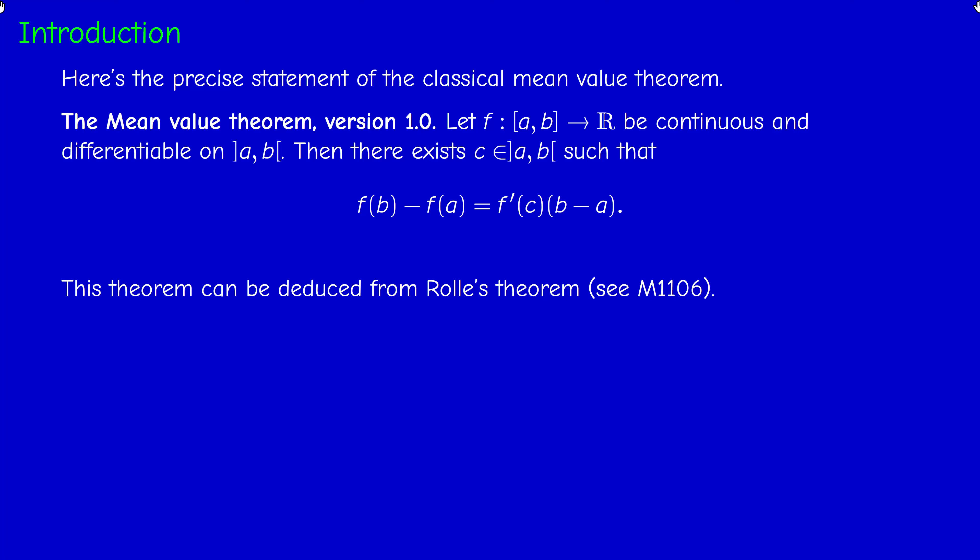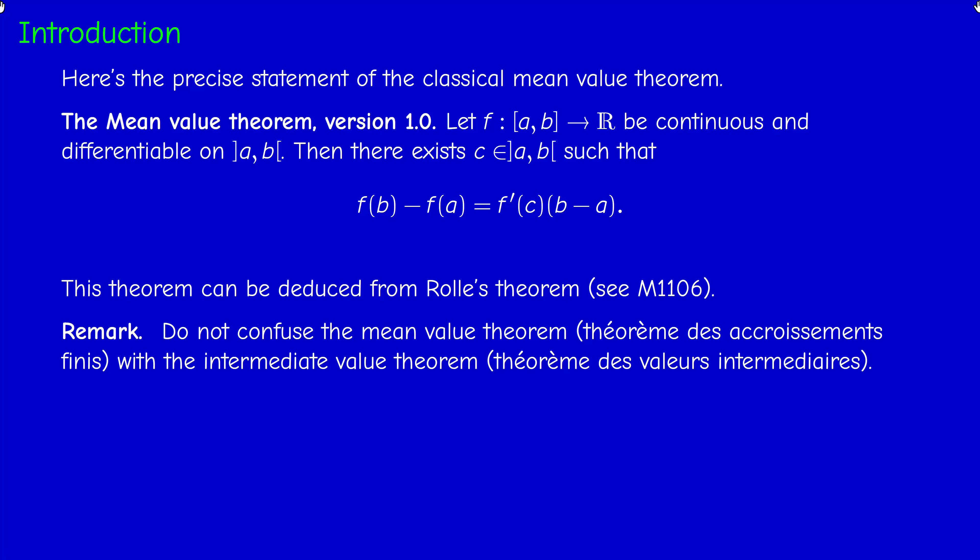Usually this theorem is proved from Rolle's Theorem, which states that under the same assumptions, if f has a local maximum or a local minimum at a point x₀, then the derivative vanishes there. We can apply Rolle's Theorem to an auxiliary function.